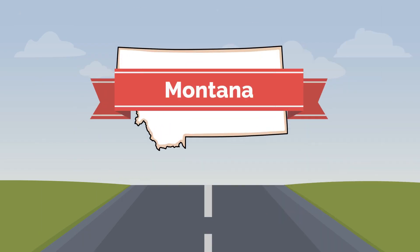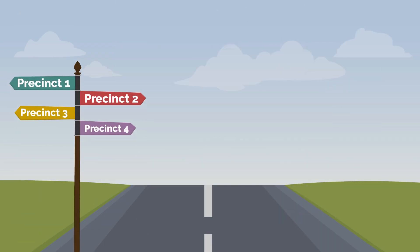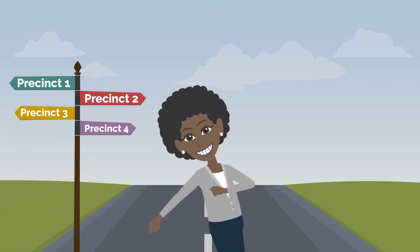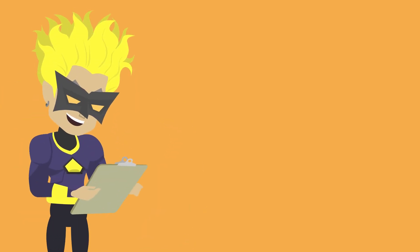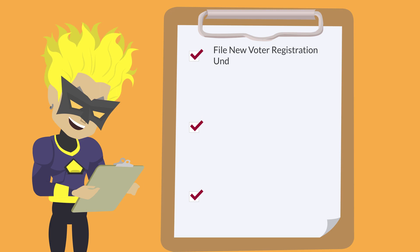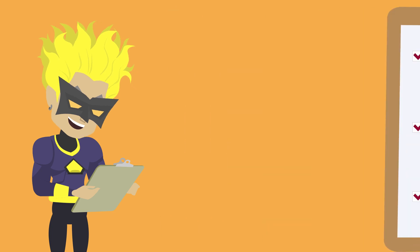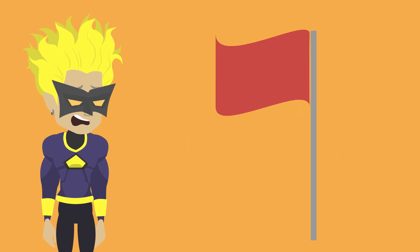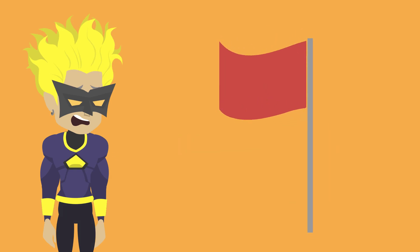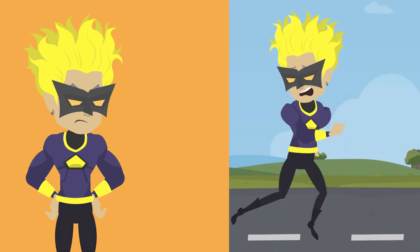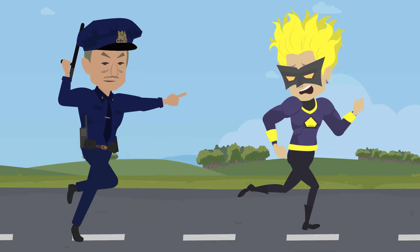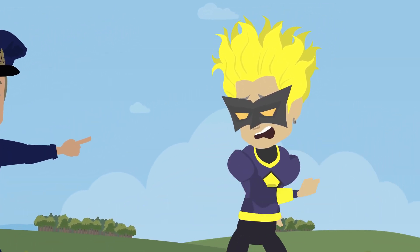Finally, since Montana operates a centralized state registration system, records of voters who move within the state are updated from their previous precinct and county when they change their registration. To bypass this internal control, the voter would have to intentionally file their new voter registration under a different name and intentionally try to mask identifiers like their date of birth or driver's license number to gain a second registration, as even partial matches are flagged for review in the system. A voter attempting to secure registration in two locations by presenting false information constitutes voter fraud — a prosecutable offense — and a second crime would be committed if that voter later attempted to vote twice in the same election.